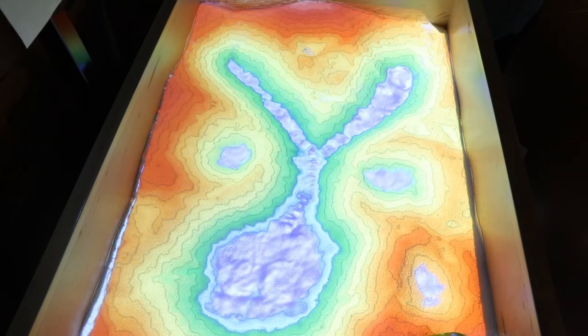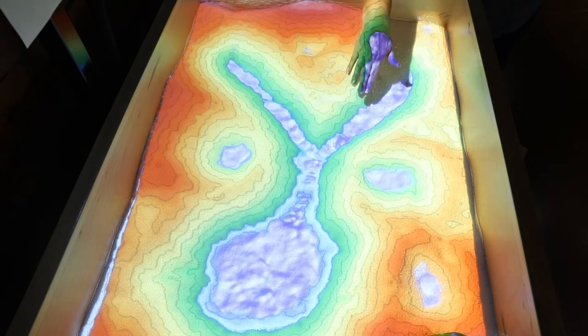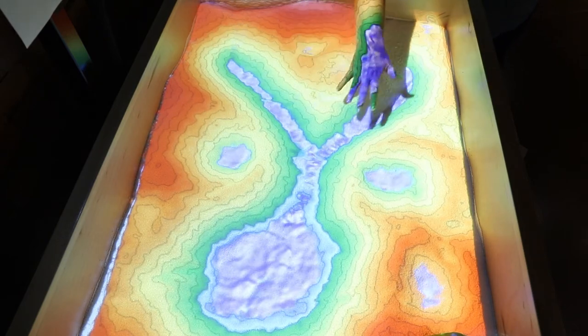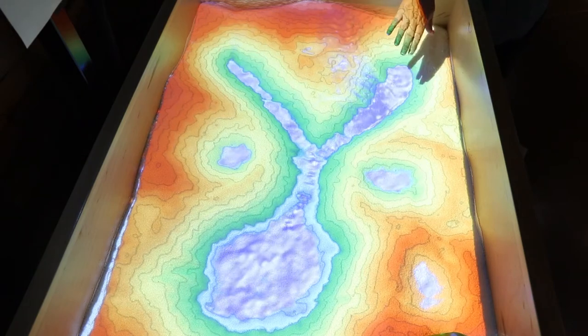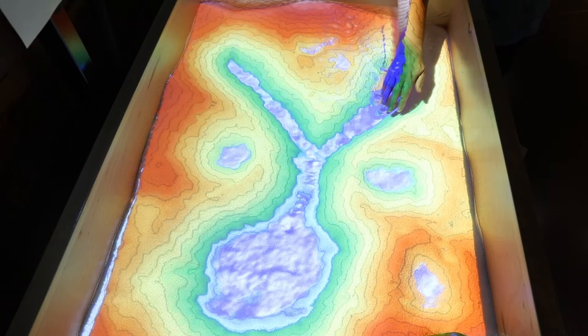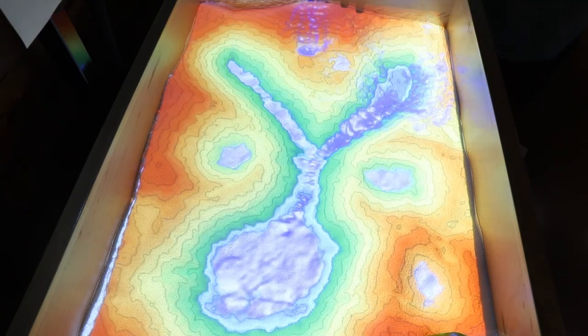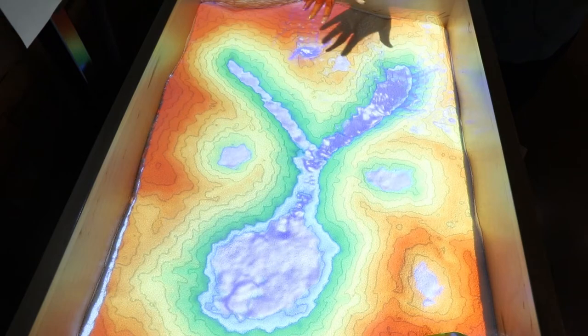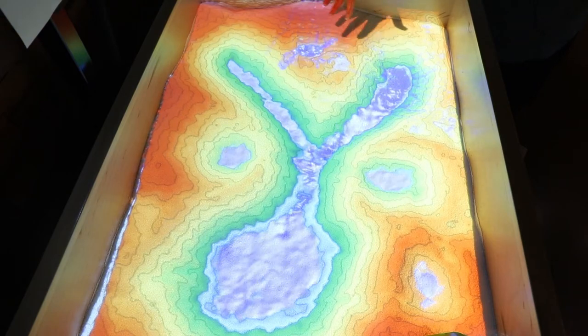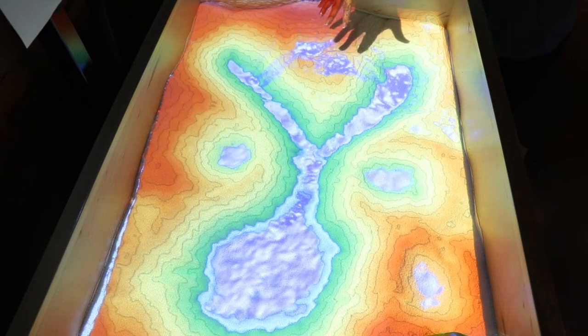So the other thing that this sandbox is able to show you is if you look at the different lines in the sandbox and the different colors, it reflects the elevation. Our lakes are always at a lower elevation, our hills are at a higher elevation, so the orange is going to be at a higher elevation. And you can see as the water begins to flow, as it starts to rain, it all starts flowing down along those contours.